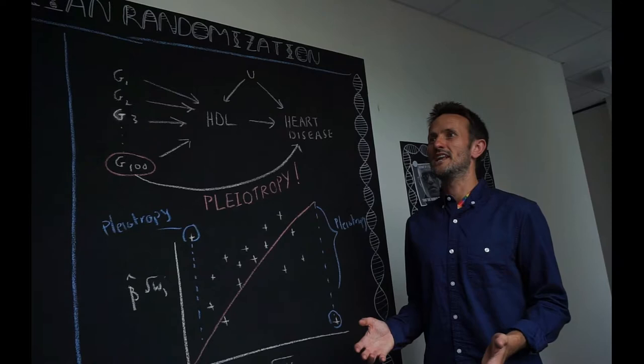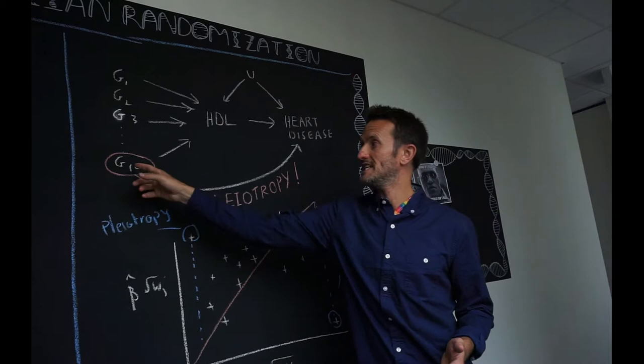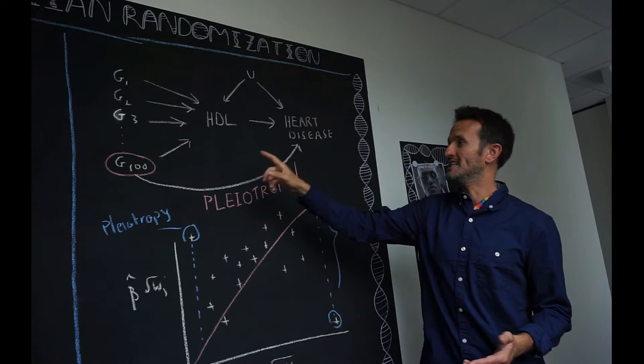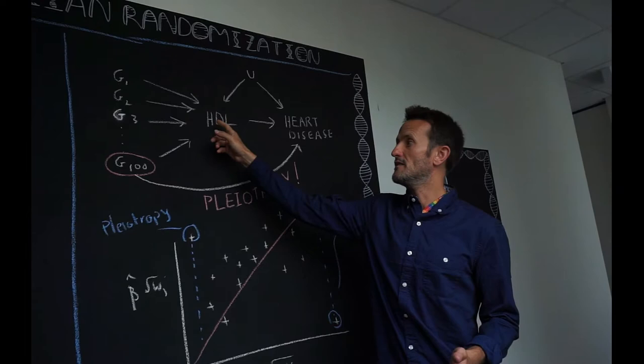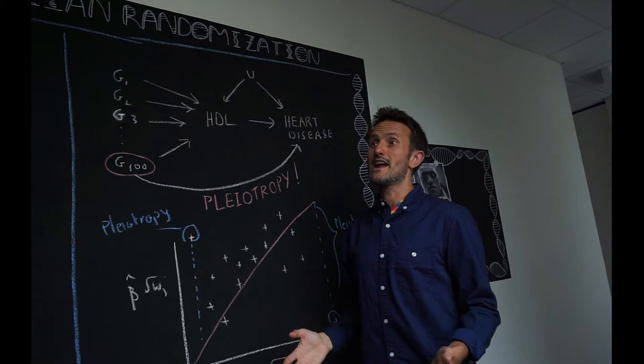So for example, if we have 100 genetic variants in our analysis, if one of those genetic variants exerts a direct effect on heart disease risk and it doesn't operate purely through its influence on HDL cholesterol, then that gene is said to have a horizontal pleiotropic effect on heart disease risk. And horizontal pleiotropy is a threat to the validity of the MR analysis. It will lead to biased conclusions and then misleading public health guidance.